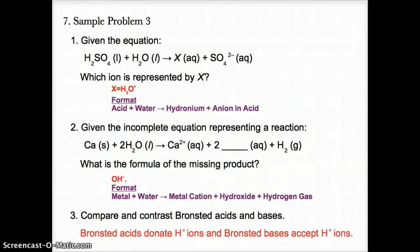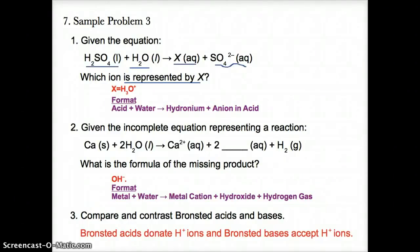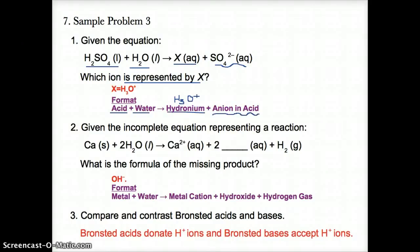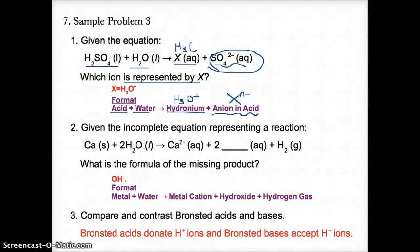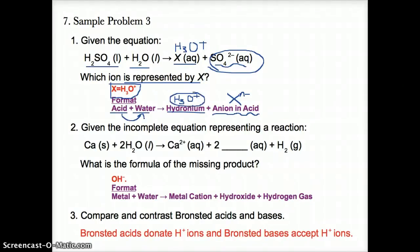Sample Problem 3, number one: which ion is X if H2SO4 reacts with H2O to produce X (aq) and SO4^2- (aq)? When an acid reacts with water, the acid donates H+ to water to produce hydronium H3O+. The only remaining part of the acid after donating H+ is the negative ion SO4^2-. Therefore, X = H3O+, because acid donates H+ to water to get H3O+, and the negative ion from the acid separates as X^N-.